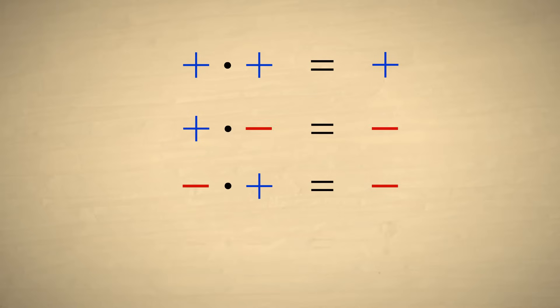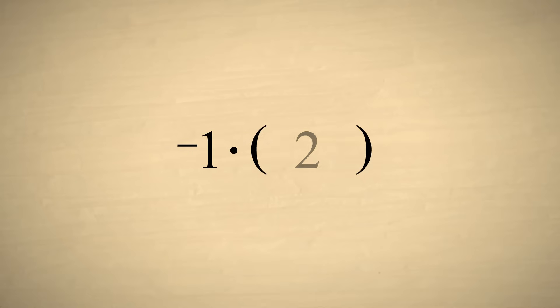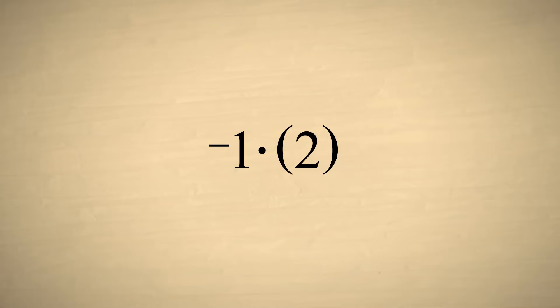But what if both operands are negative? If two negative numbers are multiplied, should the product be positive or negative? Let's try it both ways and see what happens. Let's multiply (6 minus 4) times negative 1. We know what the answer should be: 6 minus 4 is 2, and we have already shown that the product of a negative and positive number must be negative. So the answer must be negative 2.